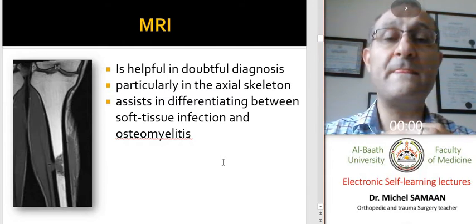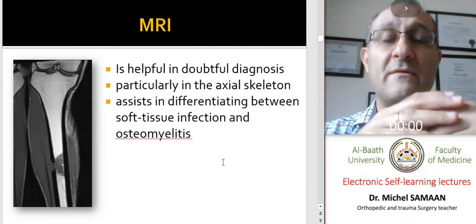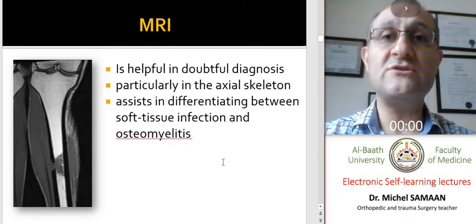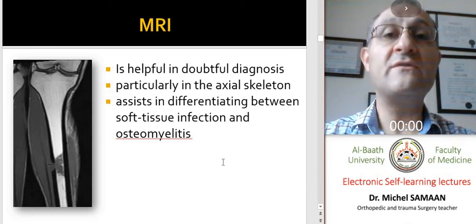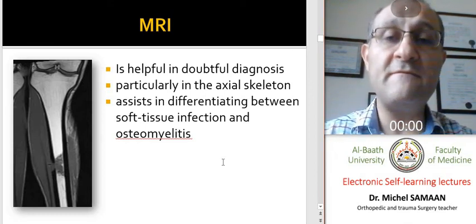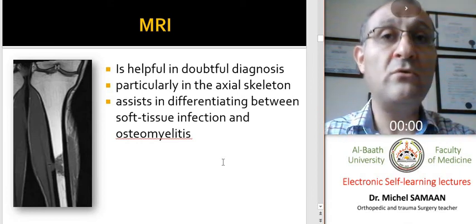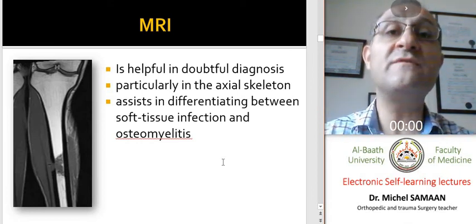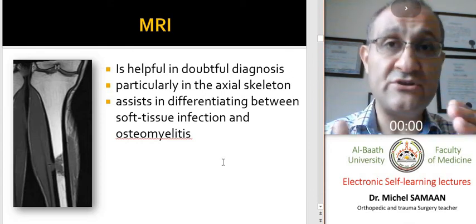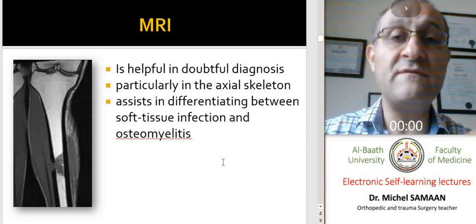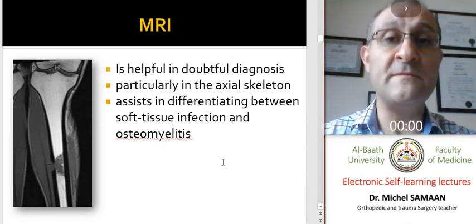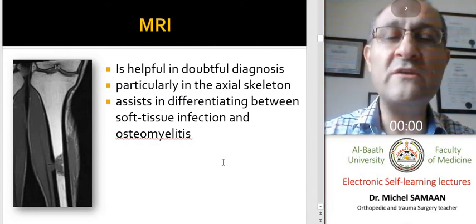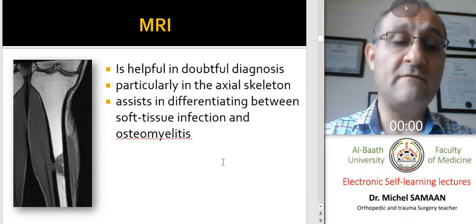The use of MRI in diagnosing osteomyelitis is not the first investigation of choice because it's expensive, but it's very important to differentiate osteomyelitis from other bone lesions such as tumors and soft tissue infections. It can differentiate the site and presence of infection in soft tissue, making it very important for differential diagnosis and doubtful cases. However, we do not routinely recommend this investigation tool.